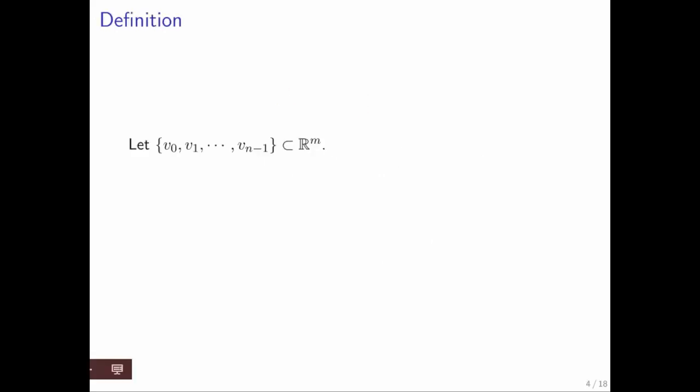So similarly, we can look at the set of all vectors that are generated by taking linear combinations of a given set of vectors, say v0 through vn minus 1. So we define the span of these vectors as the set of all vectors that are linear combinations of these vectors.